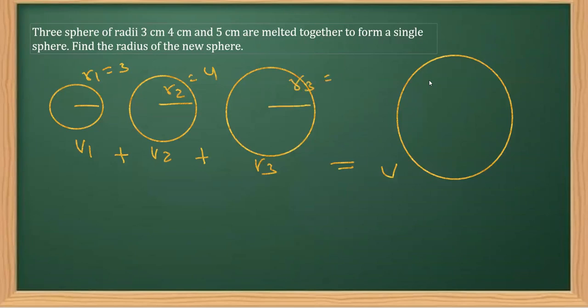And I can take this as capital R, which is equal to what we have to find. Now what we can do here is we can replace this V1 with the formula of a sphere, and that is 4/3 π r1³, plus 4/3 π r2³, plus 4/3 π r3³, is equal to the volume of this sphere whose radius is capital R: 4/3 π R³.